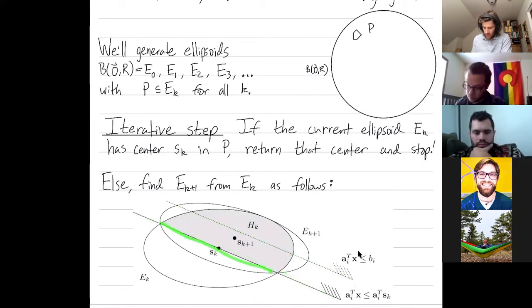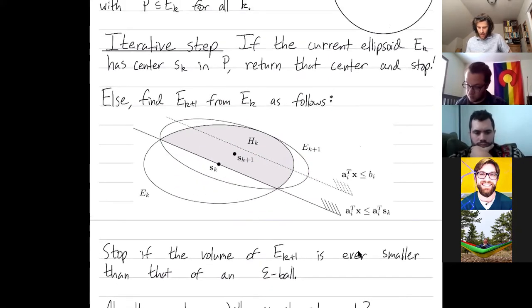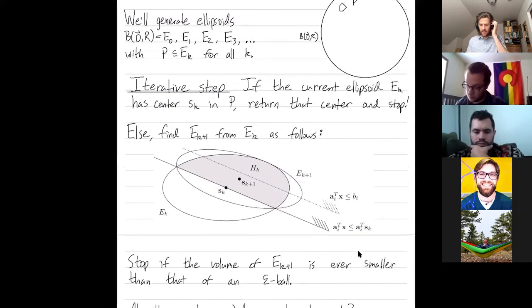So now the feasible region has to be inside here, this area hk, so we find the smallest ellipse containing hk, and that's our next ellipse in the algorithm. If we ever find an ellipse whose volume is smaller than that of an epsilon ball, then we're done because we know the feasible region doesn't contain an epsilon ball. And that's the entire algorithm.